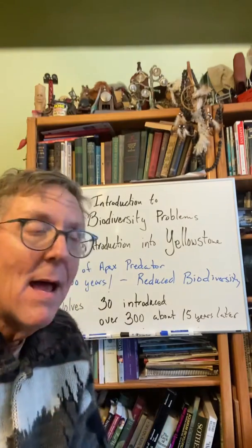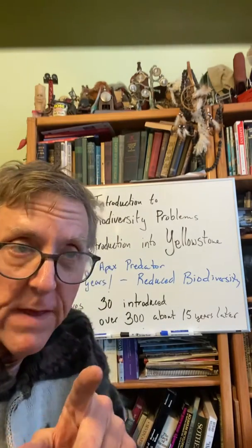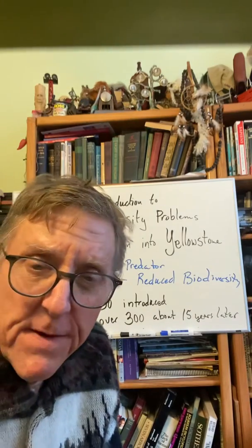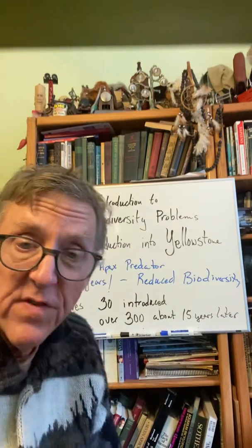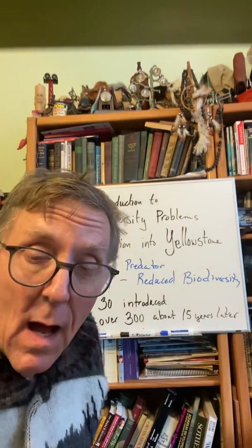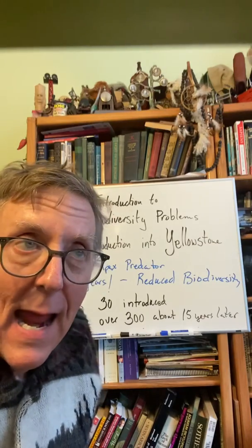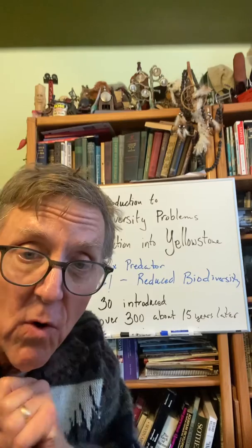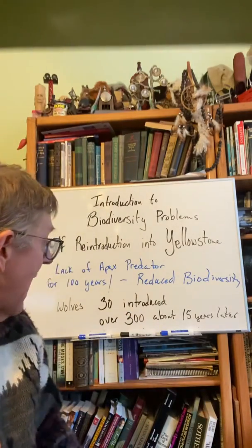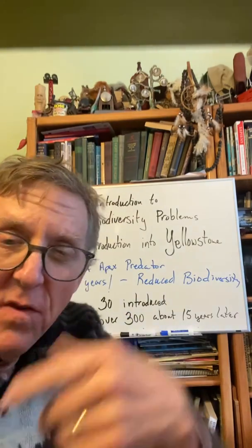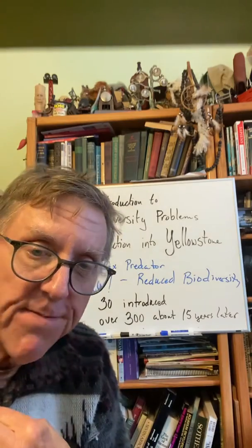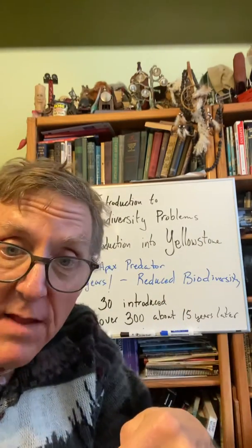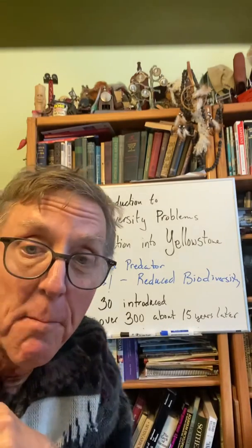Watch the video. They introduced about 30 individuals, and over about 15 years they've risen to about 300. What's happened is the biodiversity has increased. In chapter five, we talk about these different environments and then transition into issues of biodiversity.